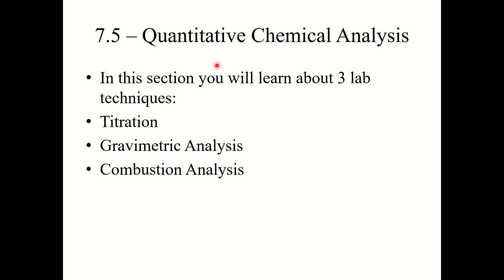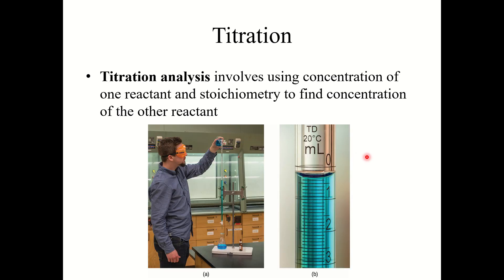Section 7.5: Quantitative chemical analysis. In this section you're going to learn about three lab techniques and how we will analyze them with stoichiometry: titration, gravimetric analysis, and combustion analysis. Let's start with titration.